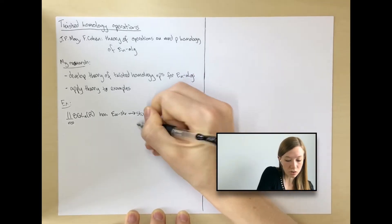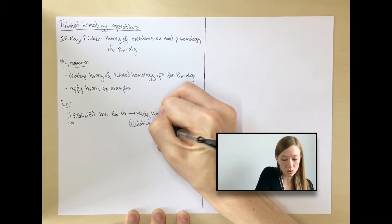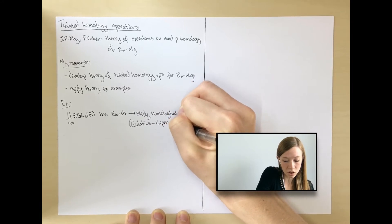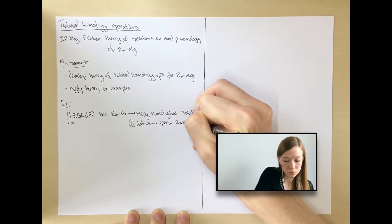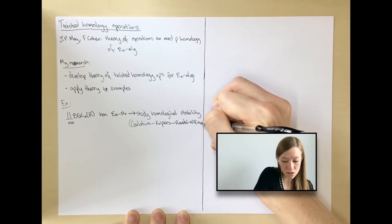This is work of Soren Galatius, Alexander Kupers, and Oscar Randal-Williams. For their work, it's really essential that you have this E-infinity structure.